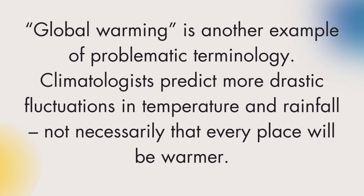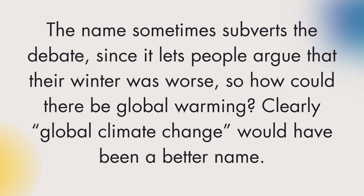Global warming is another example of problematic terminology. Climatologists predict more drastic fluctuations in temperature and rainfall, not necessarily that every place will be warmer. The name sometimes subverts the debate, since it lets people argue that their winter was worse, so how could there be global warming? Clearly, global climate change would have been a better name.